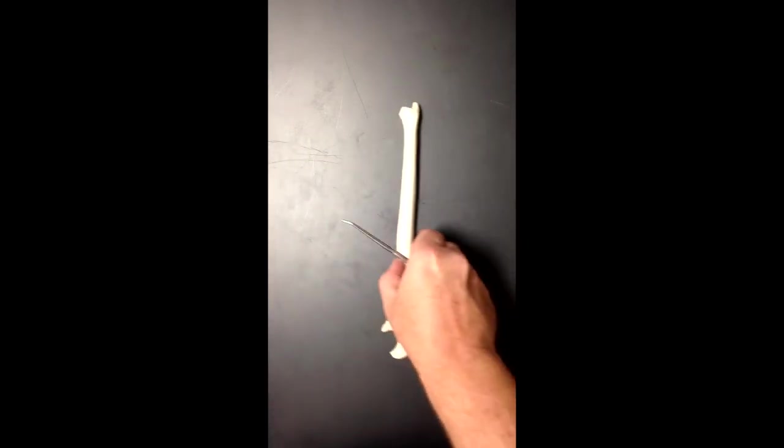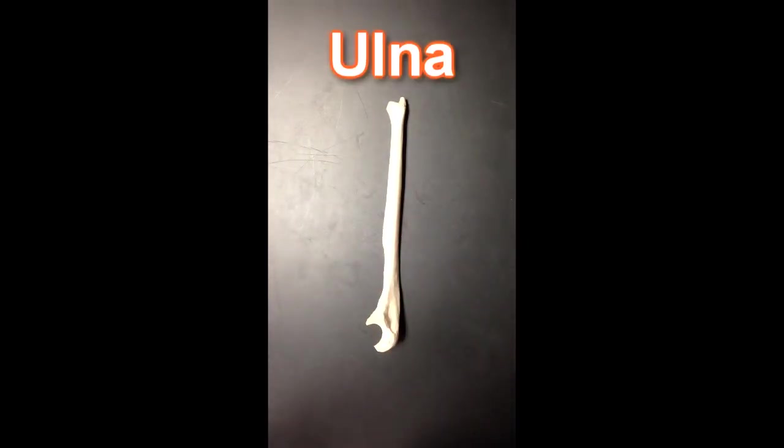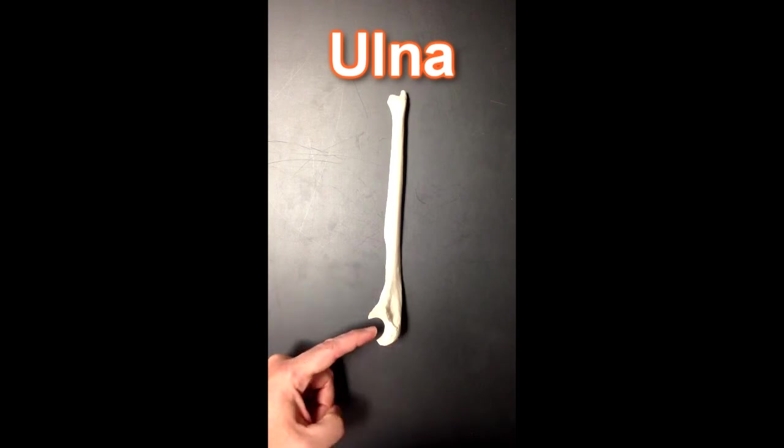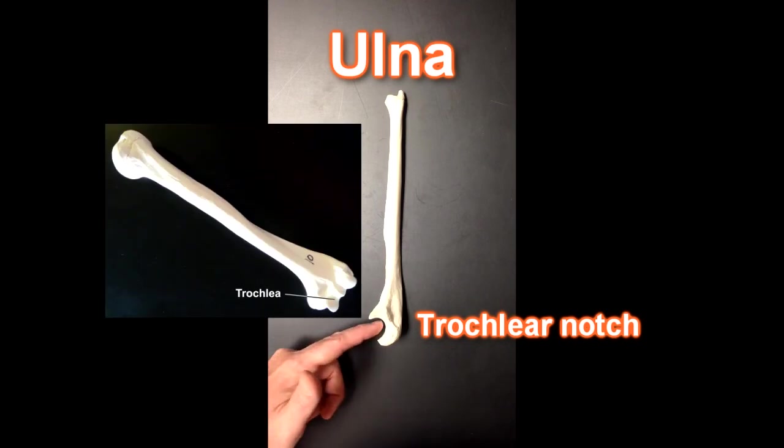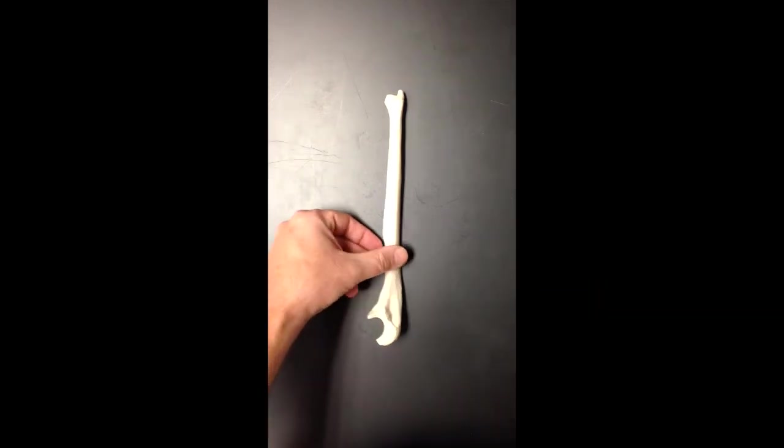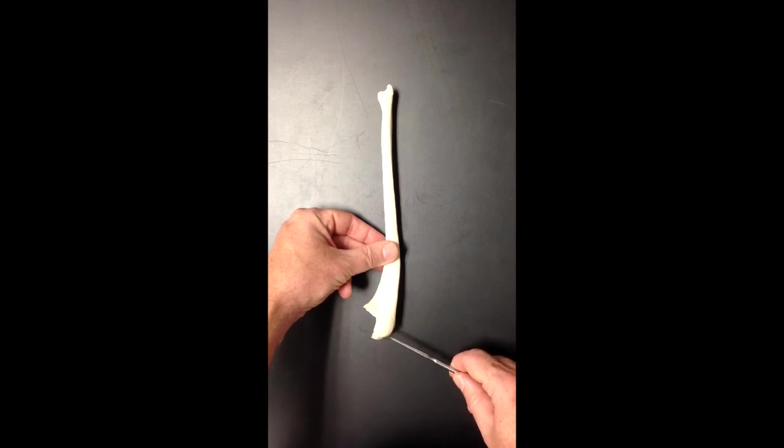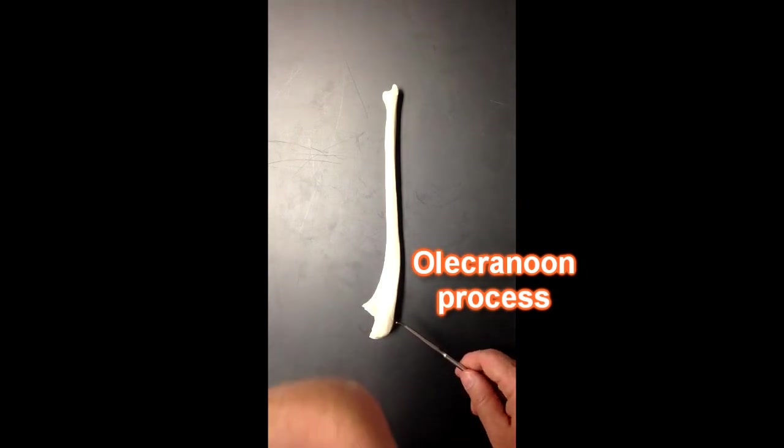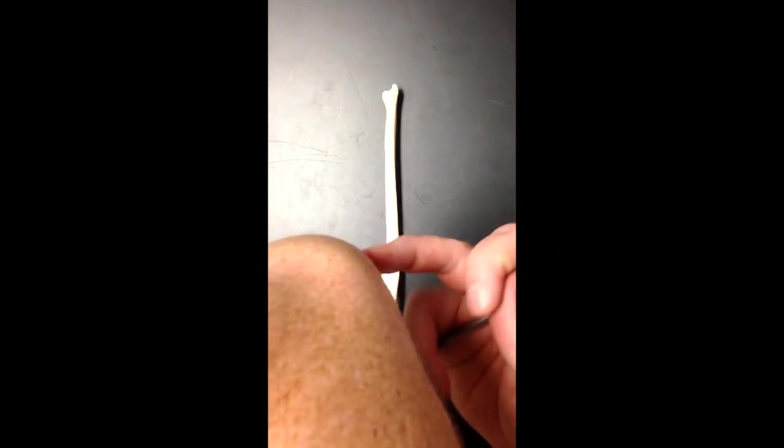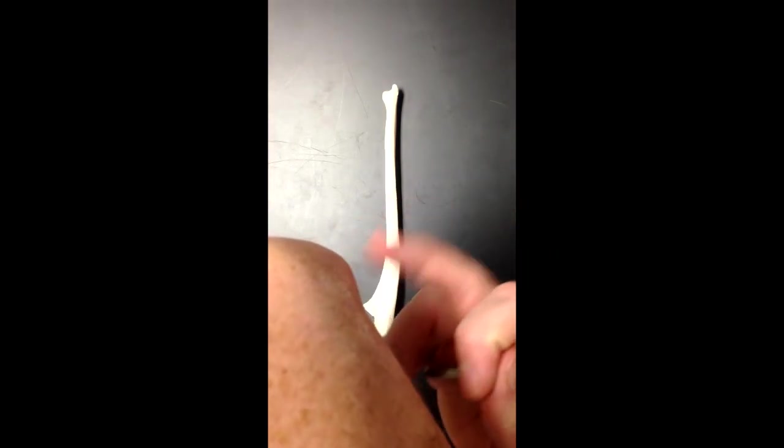If we look at the ulna, some of the structures that we can see on the ulna, again we've got this notch right here which is the trochlear notch. The trochlea of the humerus would articulate here. Another thing we can see is this big bump back here, this is the olecranon process. Olecranon means elbow. So this is the pointy part of your elbow right here.